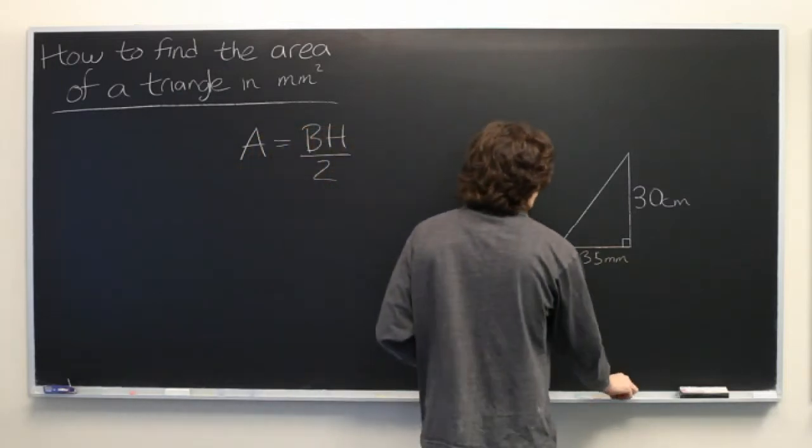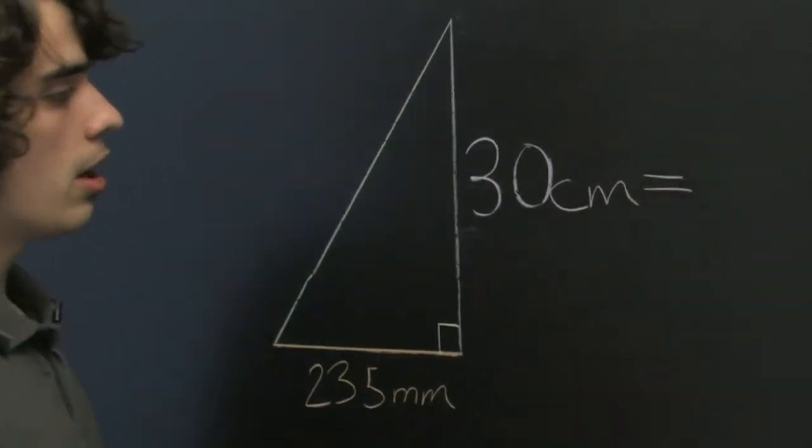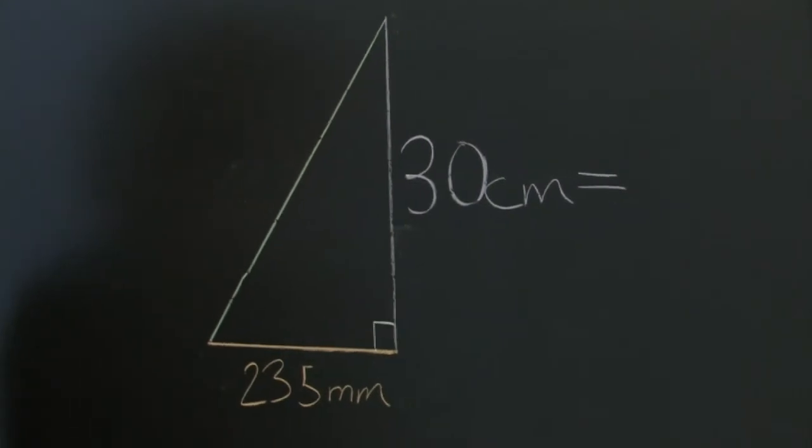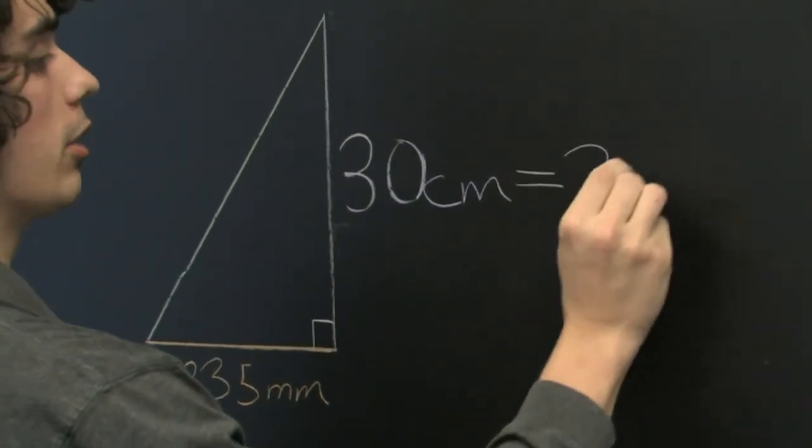So, let's convert 30 centimeters into millimeters. Since there are 10 millimeters in a centimeter, this is simply equal to 300 millimeters.